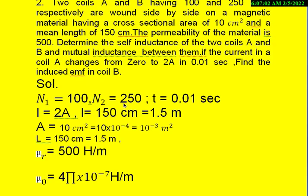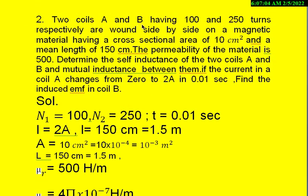So let us take another problem. Two coils A and B having 100 and 250 turns respectively are wound side by side on a common magnetic material core having cross sectional area of 10 centimeter square and a mean length of 150 centimeters. The permeability of the material is 500. Determine the self-inductance of the two coils A and B and mutual inductance between them. If the current in coil A changes from 0 to 2 amperes in 0.01 seconds find the induced EMF in coil B.